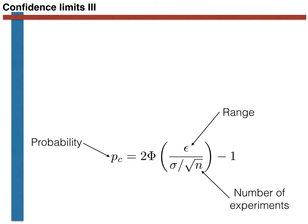This notion of a confidence limit is critical when taking averages from multiple experiments. If you discuss experiments with physicists, chemists, or biologists, you will hear them talk about random errors and error bars. The formula we have just arrived at connects a probability, a range, and a number of experiments, and thus tells you how confident you should be in your result.